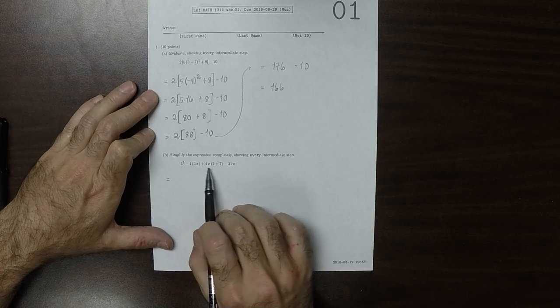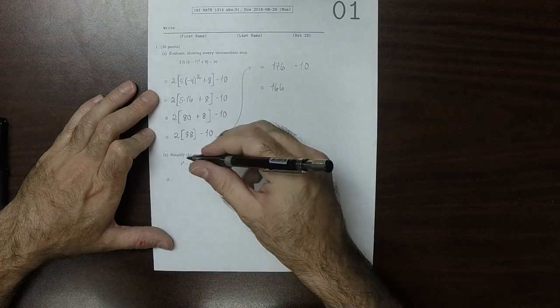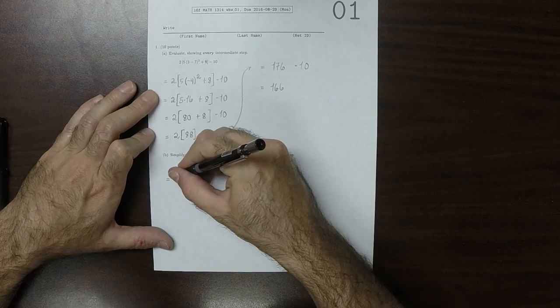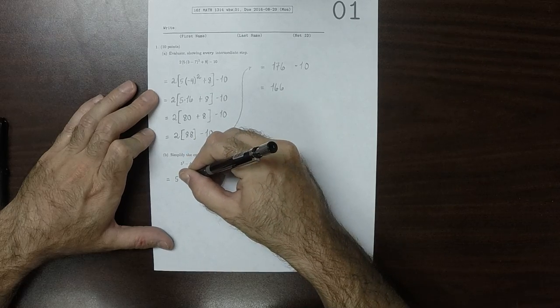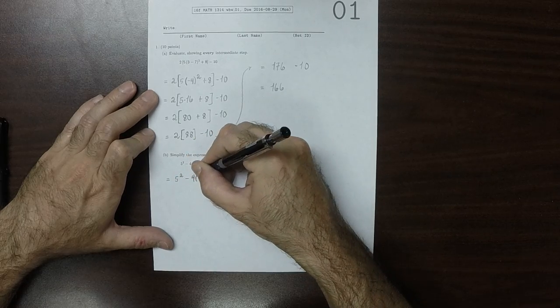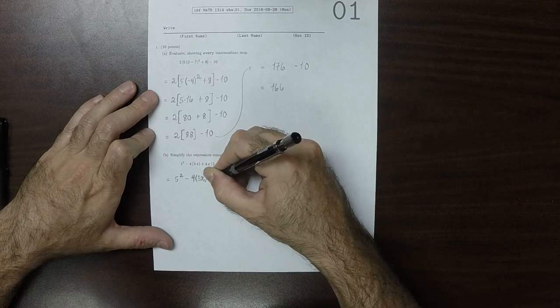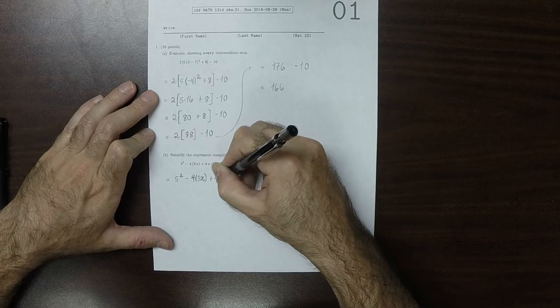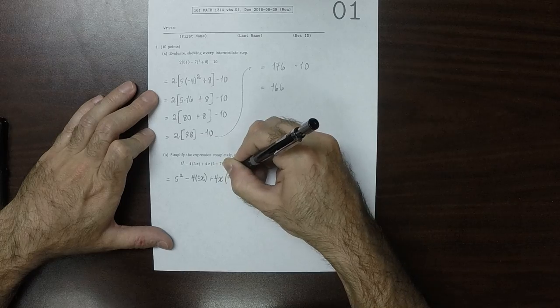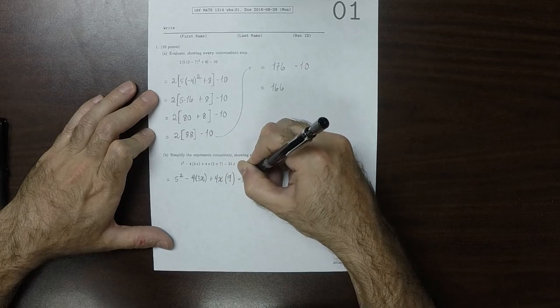So stuff in the parentheses: 5 squared minus 4 times 3x plus 4x plus 4x times 9 minus 31x.